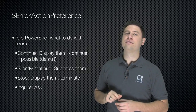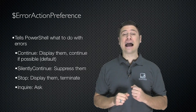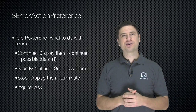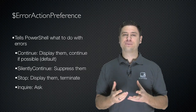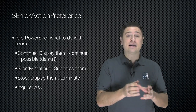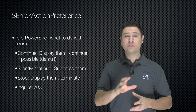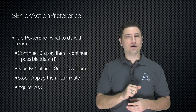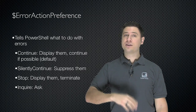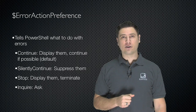We're going to start with a built-in variable called $ErrorActionPreference. This tells PowerShell what to do with errors. The default is 'continue' — you set $ErrorActionPreference equal to continue. That tells PowerShell to display the error and, if possible, continue processing. That's for non-terminating errors.